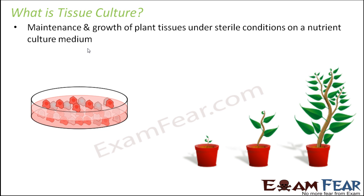In tissue culture, instead of growing all the plants in a suitable environment — because every time you will not get a suitable piece of land with the suitable environmental conditions for a particular plant to grow — if you have a single plant cell, a single plant tissue, or a particular organ of the plant, you can actually grow the entire plant under sterile conditions.